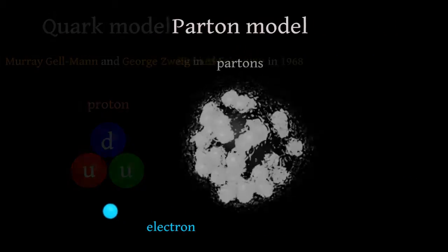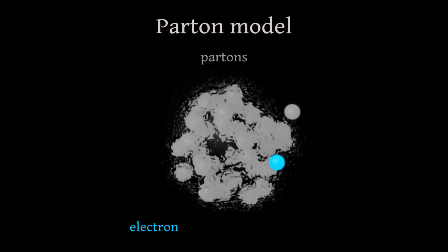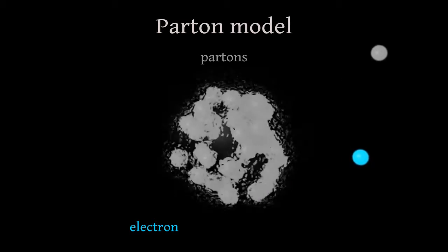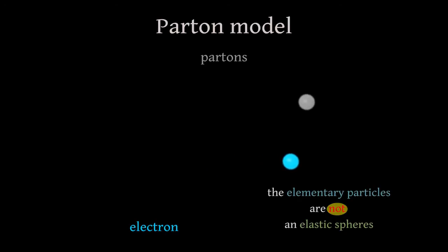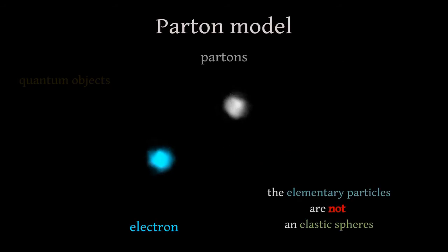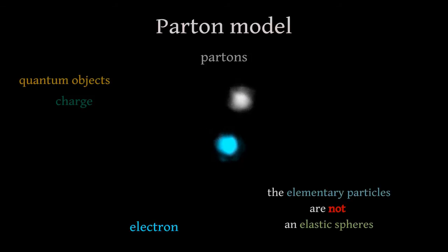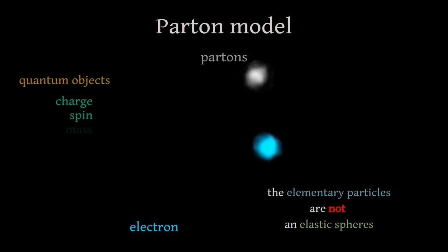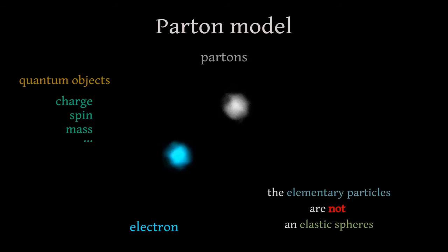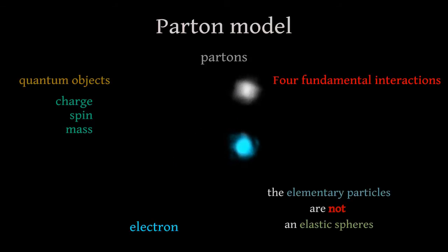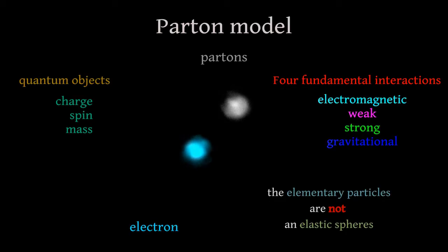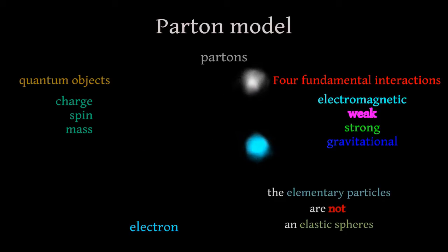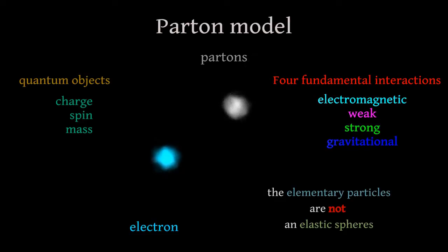In general, we cannot calculate exactly the result of such interaction, because elementary particles are not elastic spheres. They are complicated objects which have an electric charge, a spin, a mass, and so on — that is, they interact by means of all four fundamental interactions. To find the result of such a collision we should take into account all these interactions, which is a very complicated task.